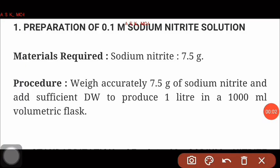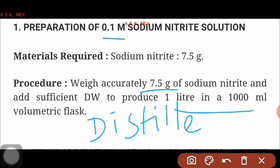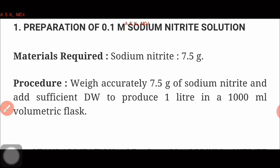Preparation of sodium nitrite solution 0.1 M is very simple: 7.5 gram dissolved in 1000 ml of distilled water. It is dissolved in distilled water and made up to the volume.